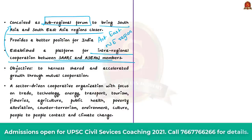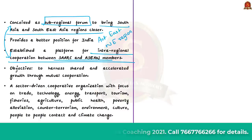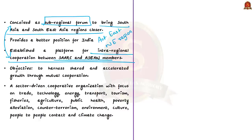The forum provides a better position for India's Act East policy and the development of the northeastern region. BIMSTEC has established a platform for intra-regional cooperation between SAARC and ASEAN members. The BIMSTEC region is home to around 1.5 billion people, constituting around 22% of global population, with a combined GDP of 2.7 trillion. The objective is to harness shared and accelerated growth through mutual cooperation. It is a sector-driven cooperative organization.